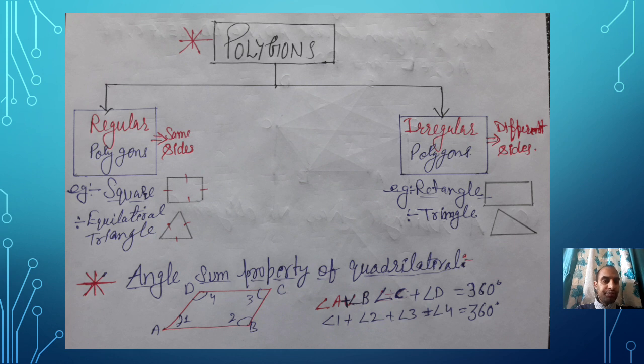And irregular polygons means different sides. As a rectangle, we have in rectangle the opposite sides are equal, but if you are talking about all sides, they are different. In case of a triangle, a simple triangle, all sides are different.